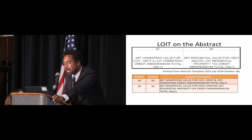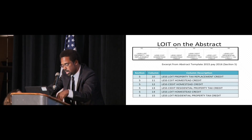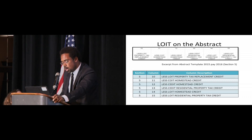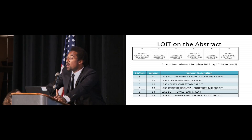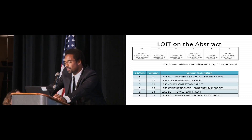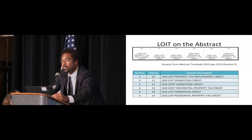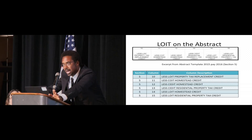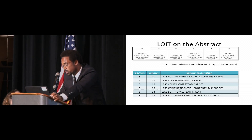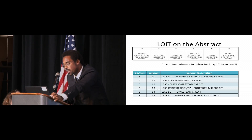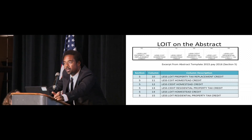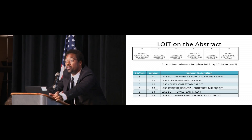The second place we saw LOWIT information on the abstract was in Section 5. These are the sections, columns, and names we were using for last year. Now, after there was a decision to use property tax relief, the county then had the decision of how that property tax relief would be applied. The three options to choose from were homestead, qualified residential, and all taxpayers equally — generally referred to as just applying it to everyone across the board. Regardless of what bucket we saw at the top, those were the three options for property tax relief.